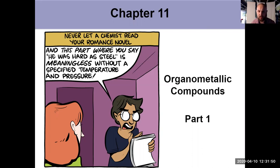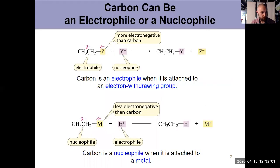But now we're going to look at the flip side of that, making carbon nucleophilic so it itself can react with an electrophile. Up top here is what we've seen in the past - carbon attached to something more electronegative, an electron withdrawing group, so it gets a delta positive.